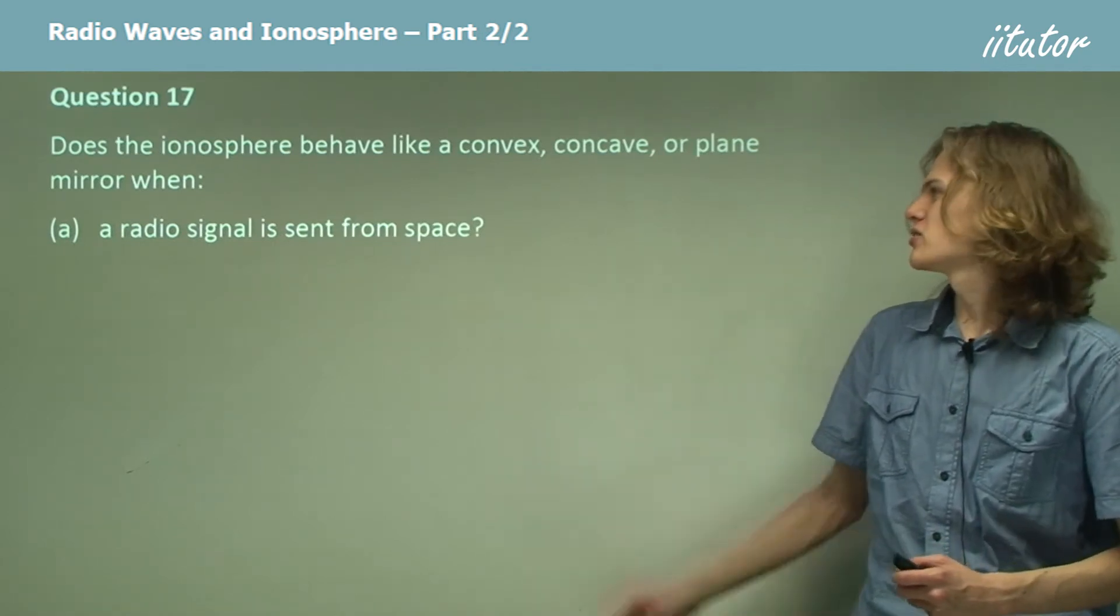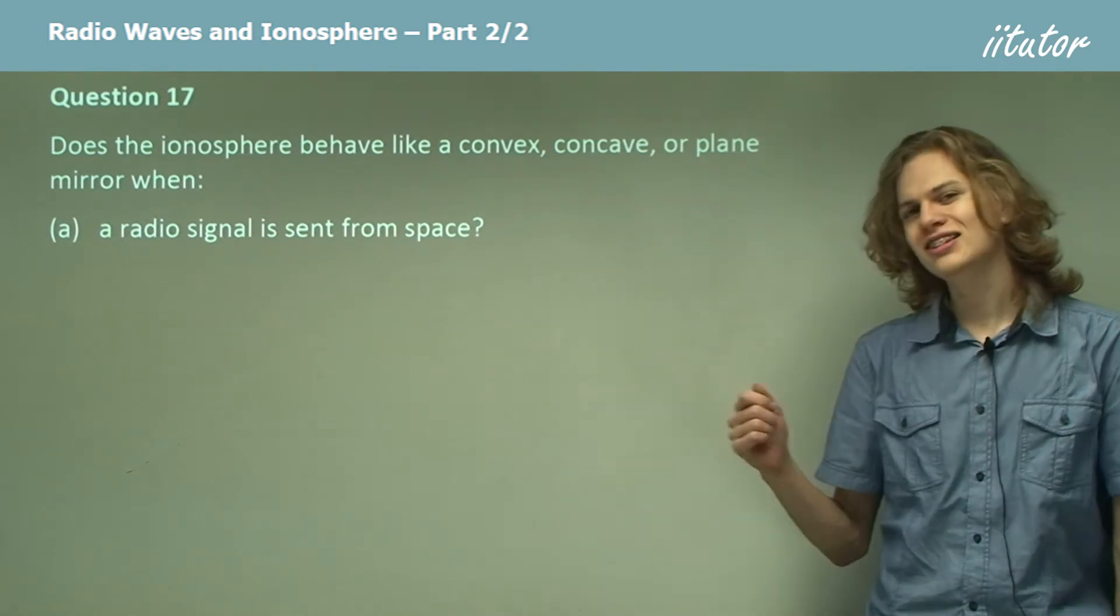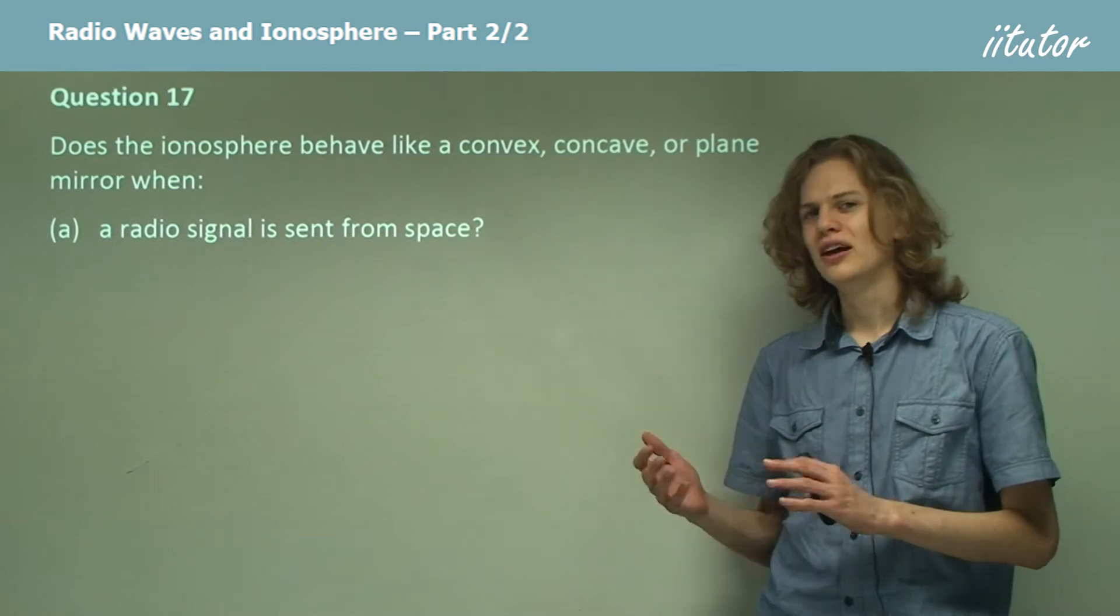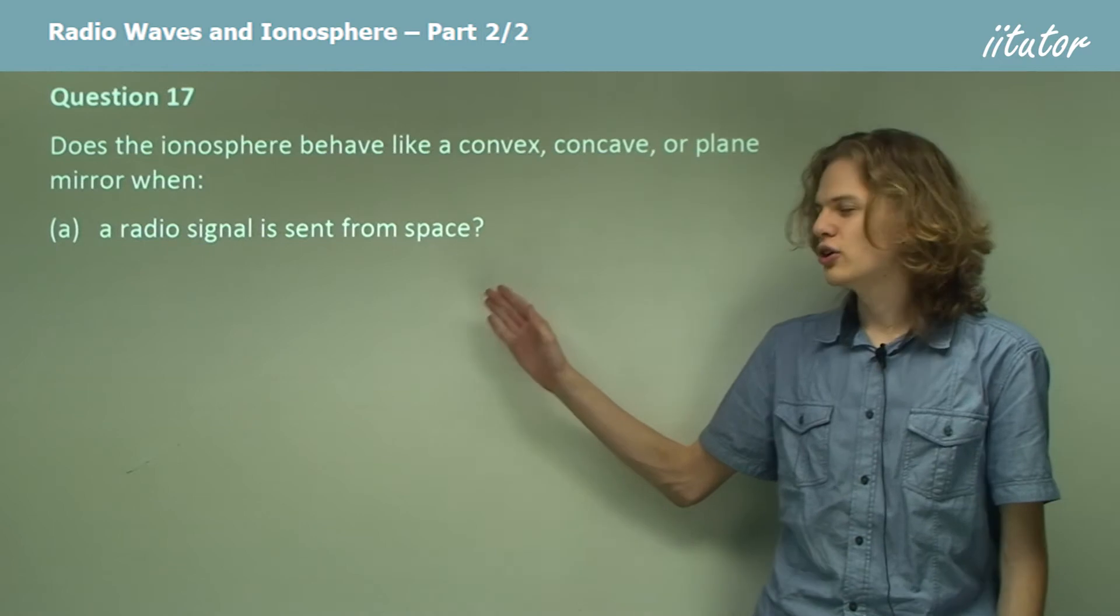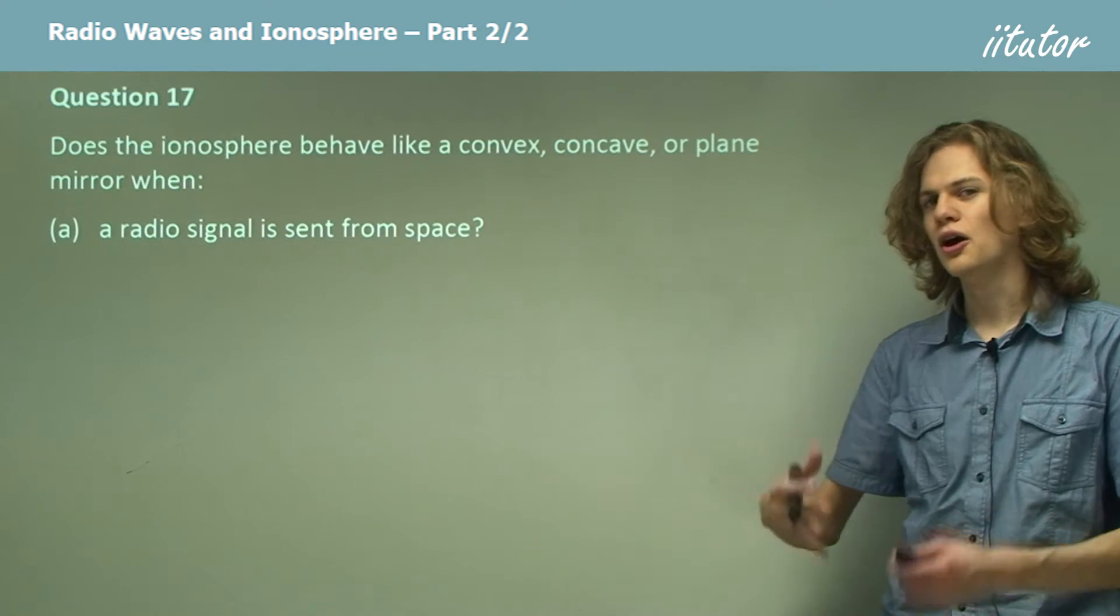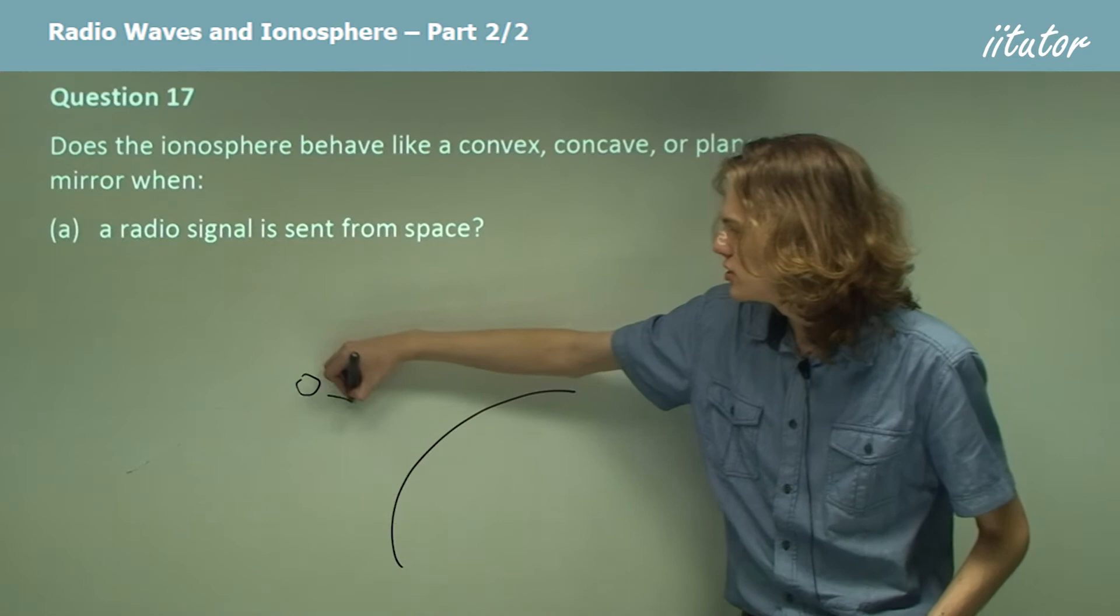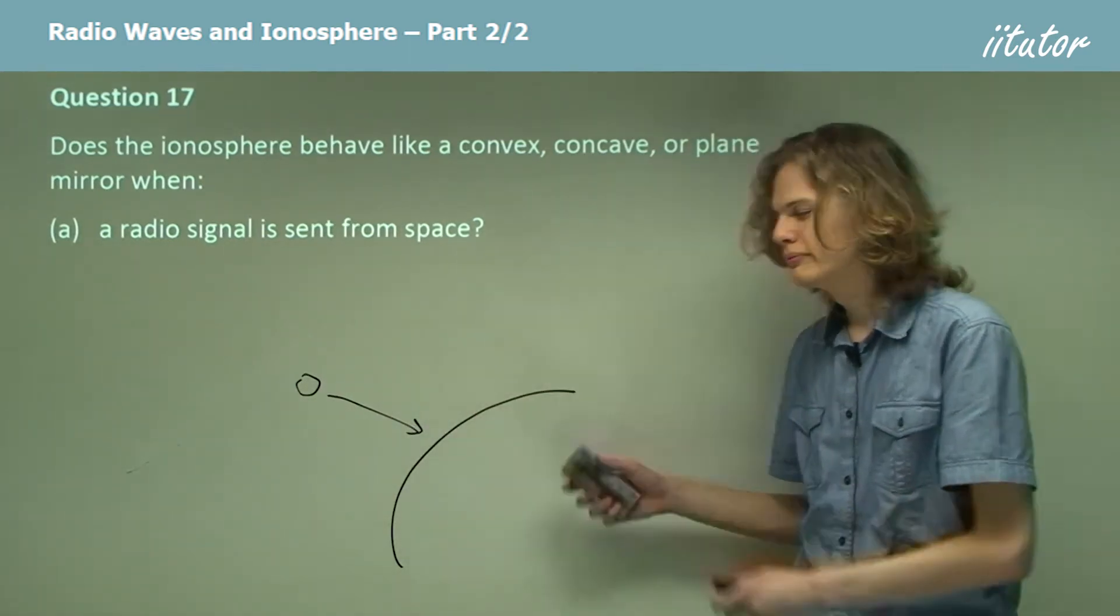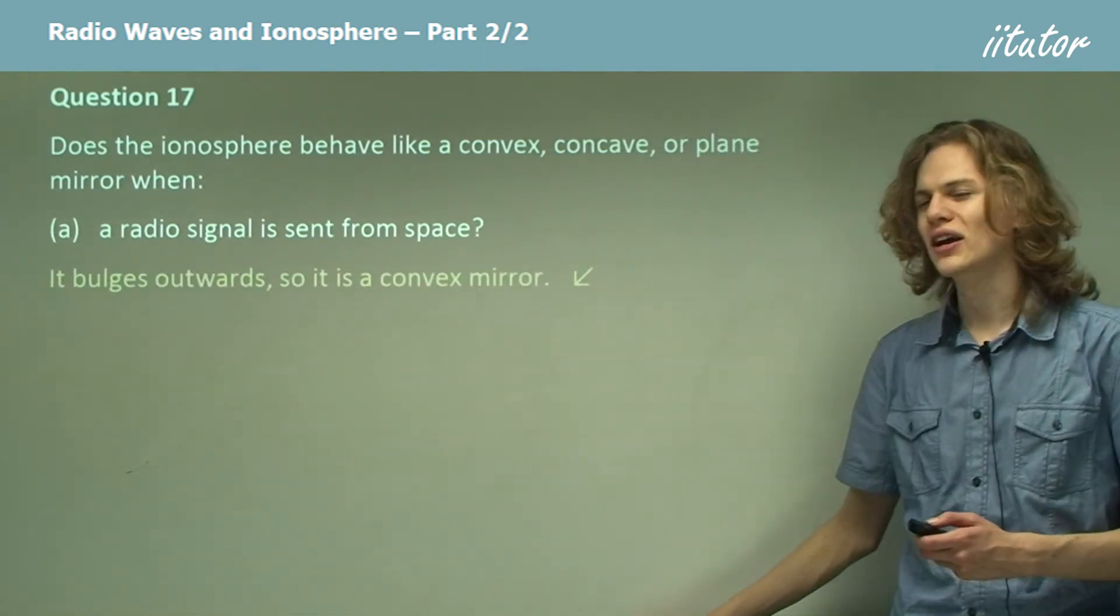Question 17. Does the ionosphere behave like a convex, concave, or plane mirror when sending a radio signal from space? The ionosphere is reflective no matter which direction radio waves come from. When sending a signal from space down to the ground, the ionosphere appears as a layer around the Earth that looks like a mirror bulging outwards - a convex mirror.